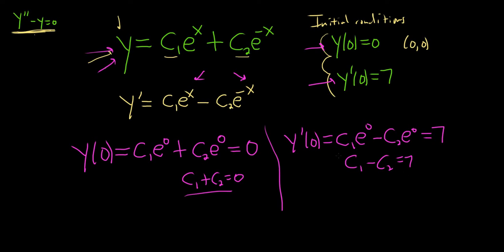All right, looks like we have two equations. So what we can do is we can write them together and solve them. So we have c1 plus c2 equals 0, and c1 minus c2 equals 7. If you just add these, looks like you just get c1 plus c1, so you get 2c1. And that's equal to 7. So dividing by 2 will give us c1 equals 7 halves.